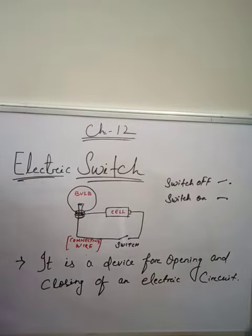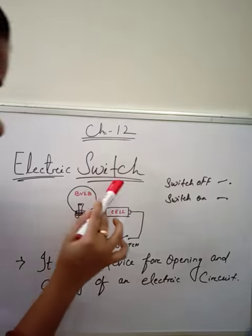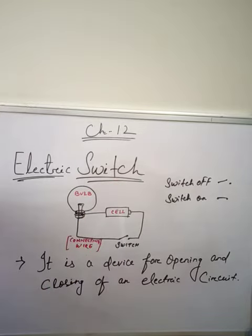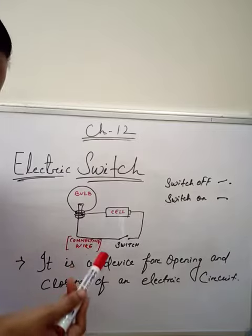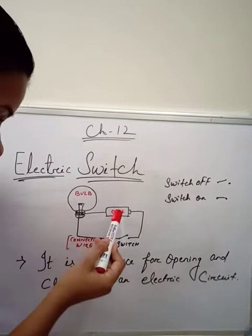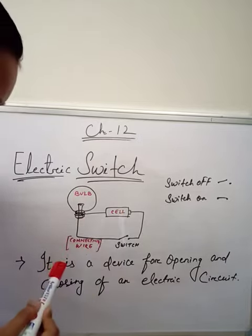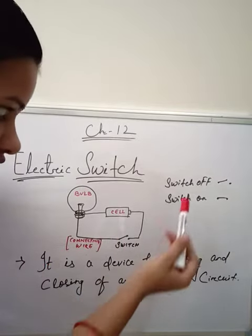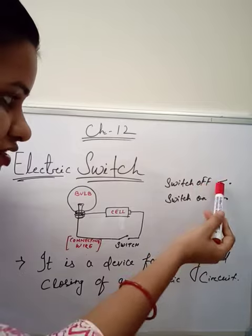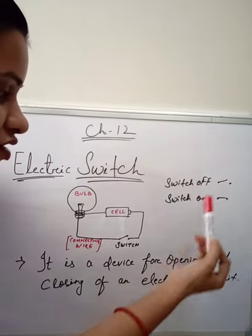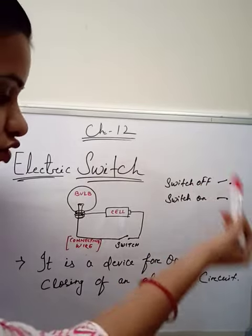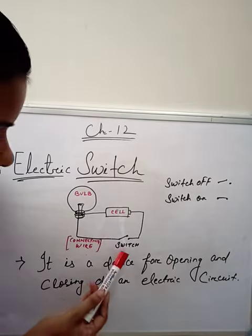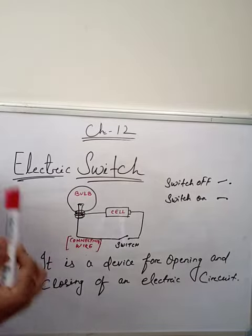Now we come to the electric switch, which is a very important part of the electric circuit. Previously, the electric circuit we made used a bar cell and connecting wire. Here I have used the symbol of the switch. You can see: switch off means it is open, and this is the symbol of switch on.